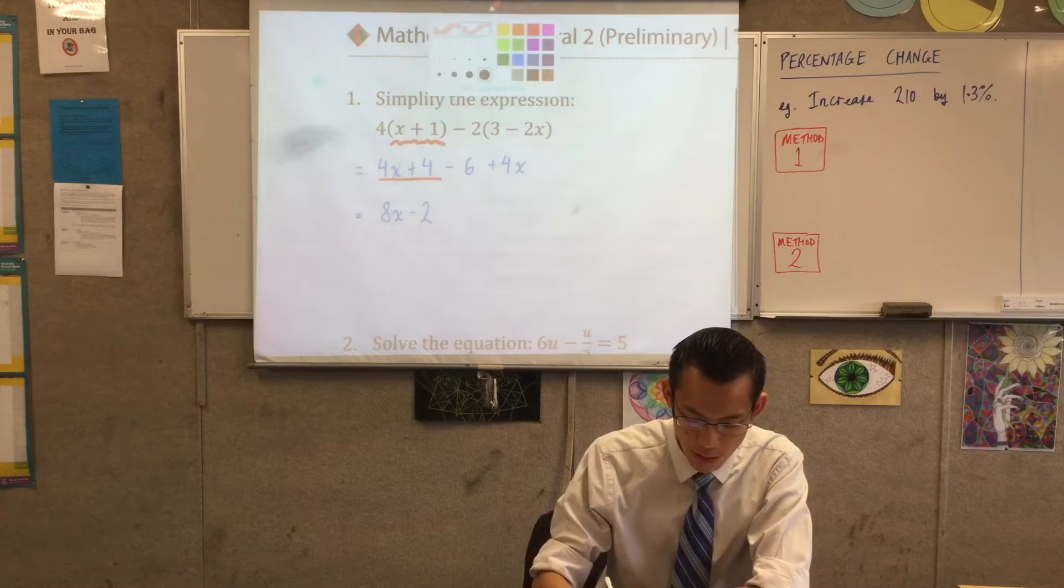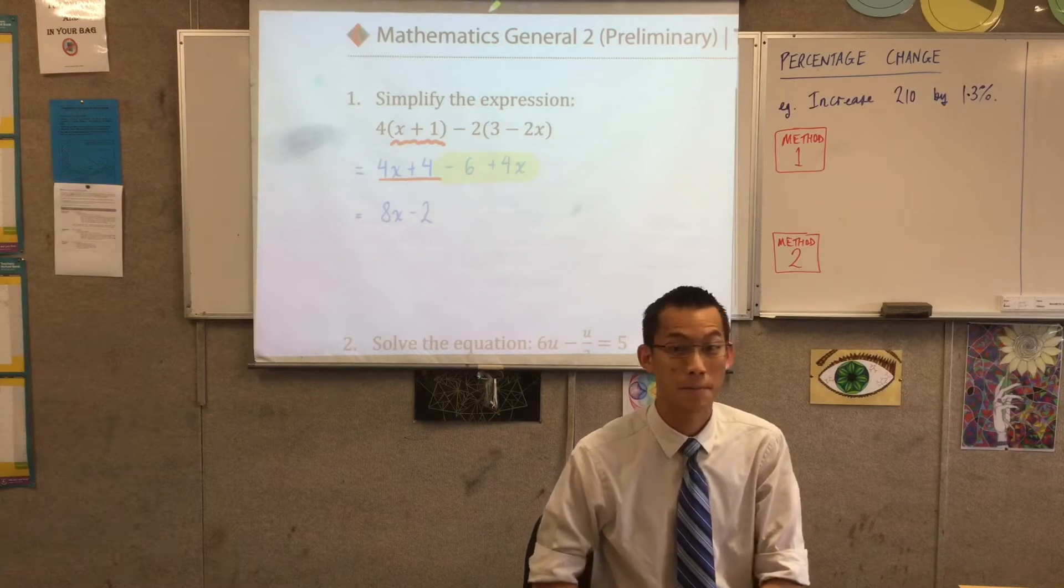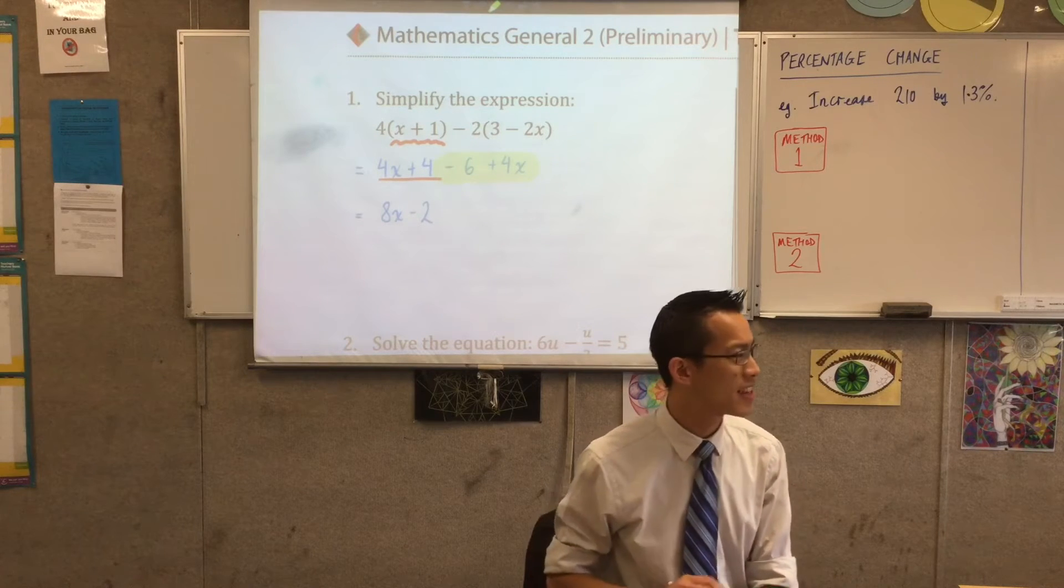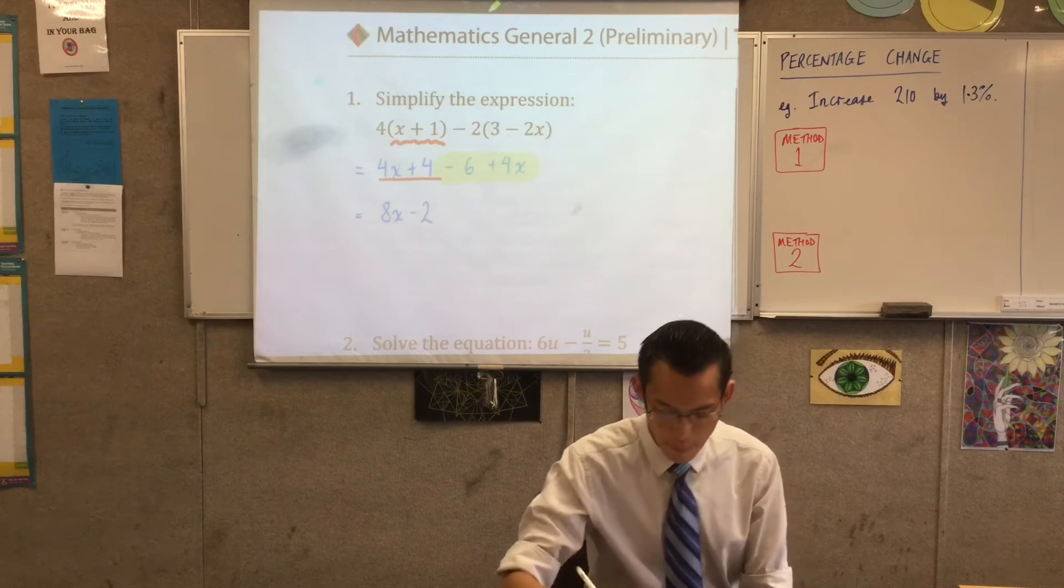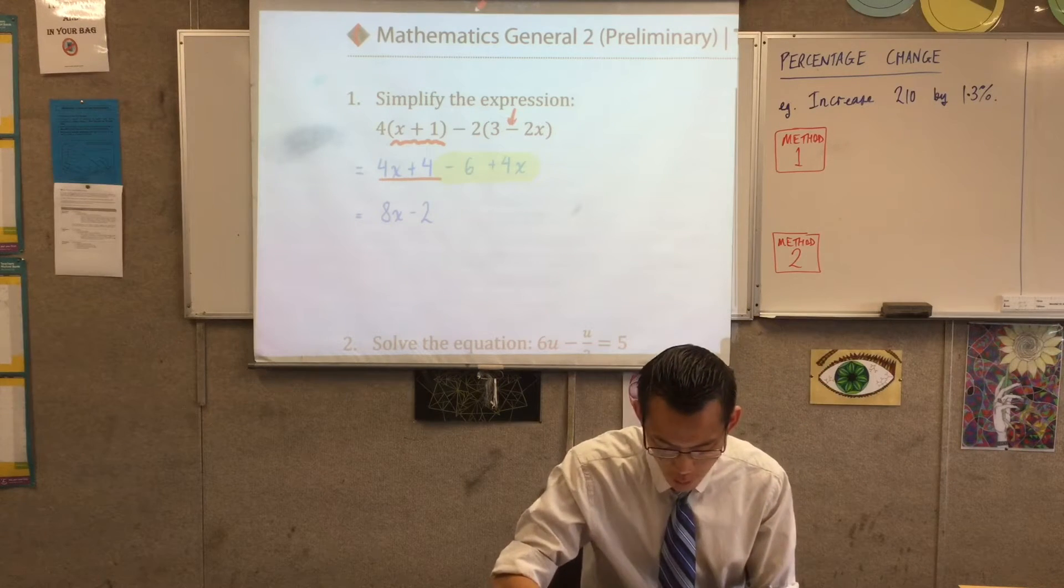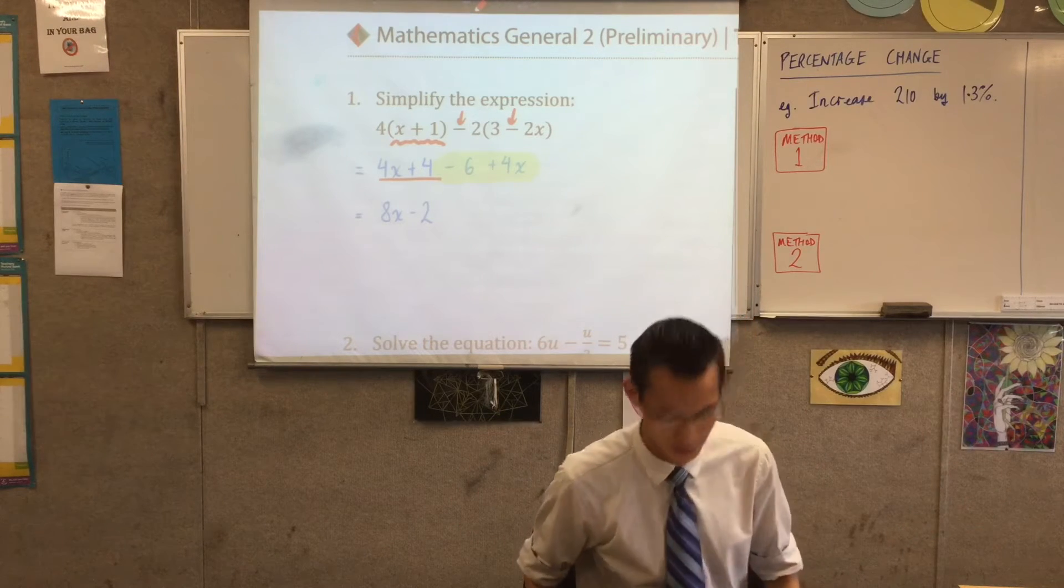You tell me, what do you think would be the most common error when you do the expansion over here? What do you guys reckon? Yeah, it's going to be that double negative, right? It's easy to just say, oh, minus this, minus that, but of course, you've got to have both of these guys interacting together, and when you multiply, two negatives gives you a positive.